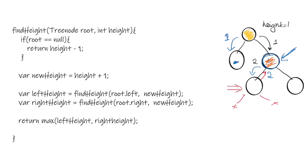We go to its right and the same thing follows. So far we are able to get the maximum height of 2. From this particular node, we return the maximum height found so far, which is also the maximum depth. Now we compare it with the height from the left subtree and the height from the right subtree. So the final height will be 2.